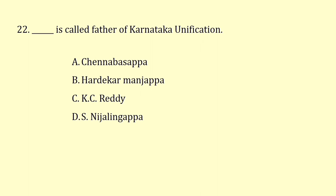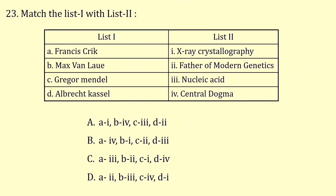Who is called the Father of Karnataka Unification? The correct answer is Aluru Venkata Rao, which is not given in the options. Match list 1 with list 2: Francis Crick proposed the Central Dogma. Max von Laue is associated with X-Ray Crystallography. Gregor Mendel is the father of modern genetics. Albrecht Kossel is associated with nucleic acids. The answer is option B.